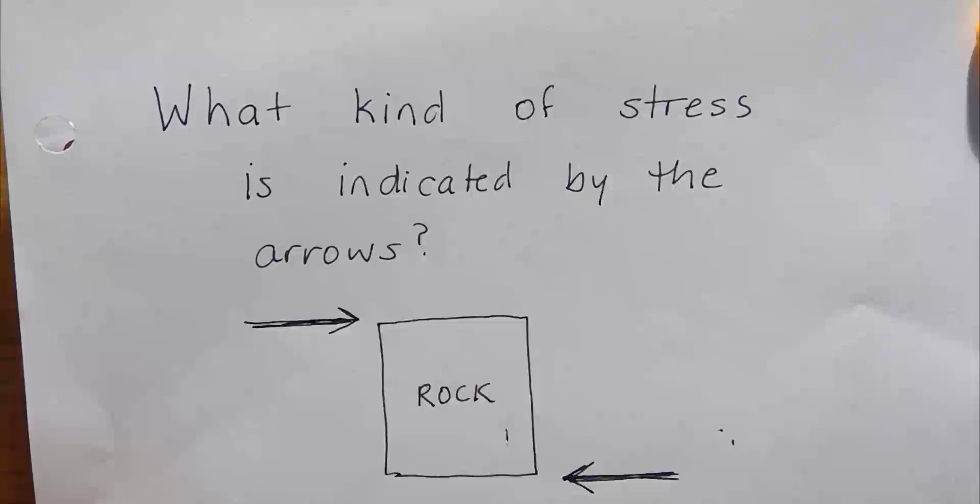So what do you think about this question? What kind of stress is indicated by the arrows? Notice the top arrows pushing at the top part of the rock. The bottom arrow is pushing at the bottom part of the rock in a different direction.